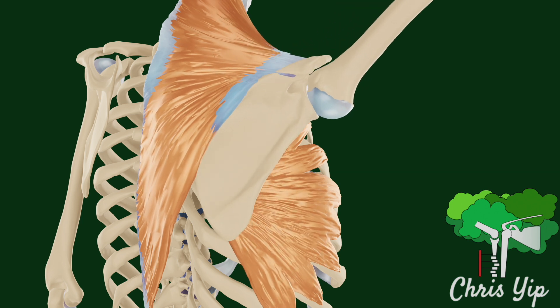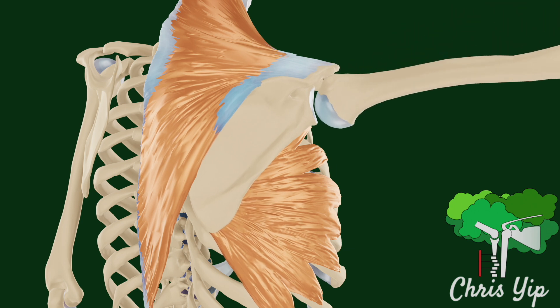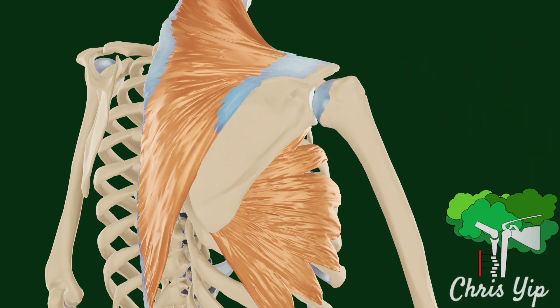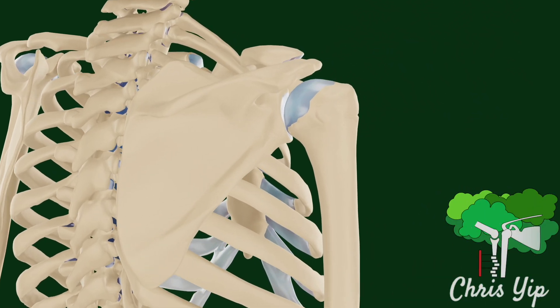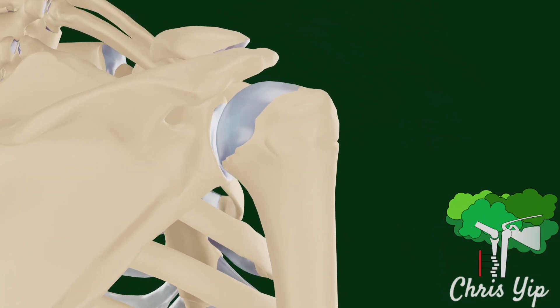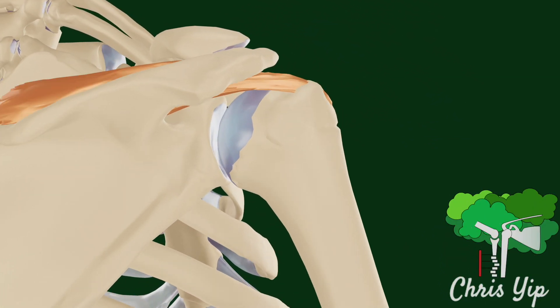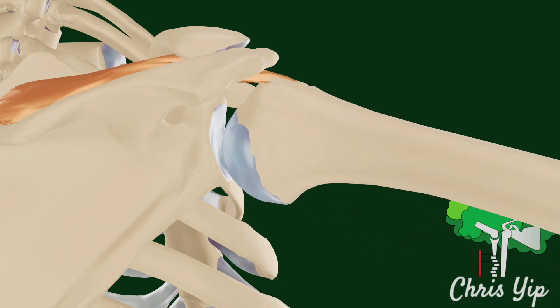Any cause leading to the weakness or degeneration of these muscles can result in regular contact between the acromion and the humerus, causing impingement.